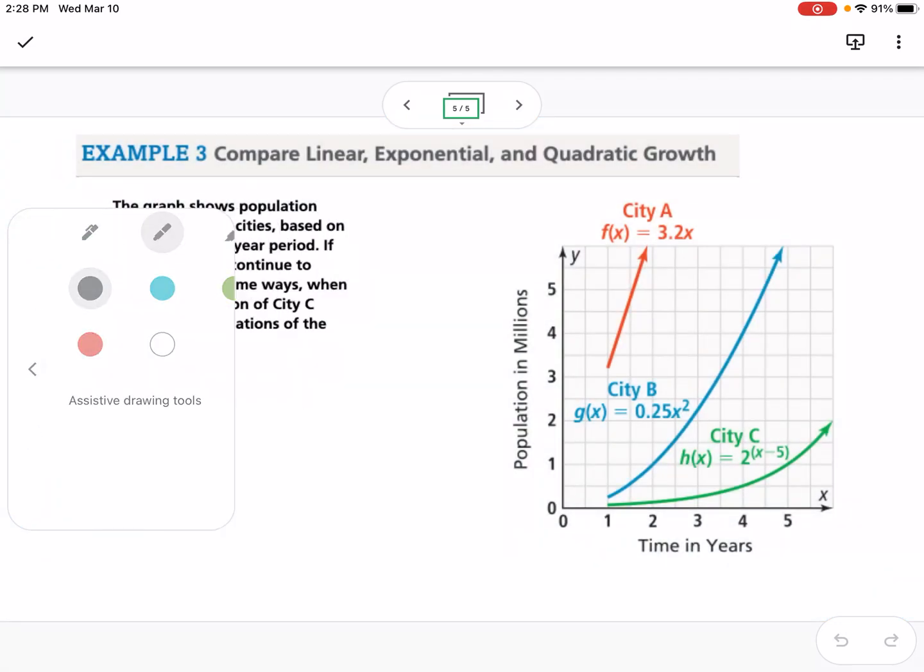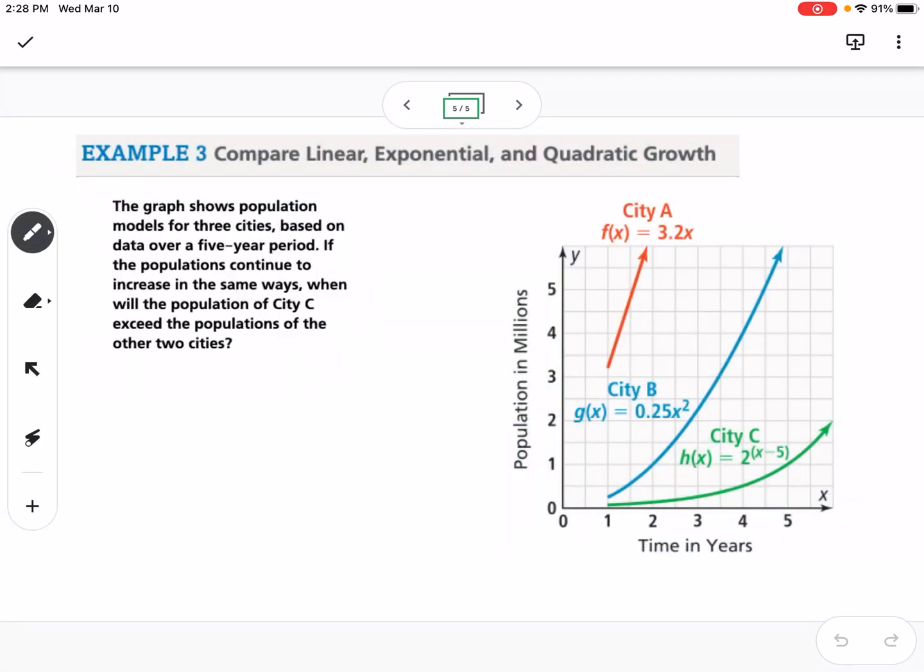So our last example here says, the graph shows the population models for three cities based on data over a five-year period. If the populations continue to increase in the same ways, when will the population of city C exceed the populations of the other two cities? So we can tell that city A is a linear function. I can tell by the equation, and I can also tell by the graph since it's a line. City B is a quadratic function, and city C is an exponential function.